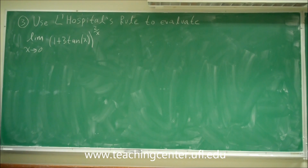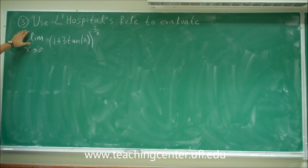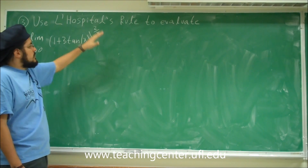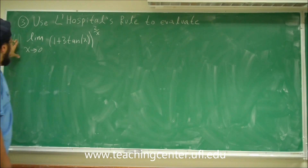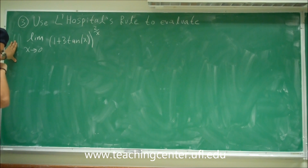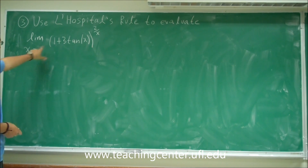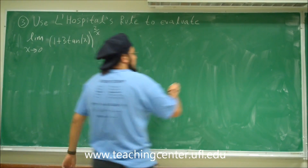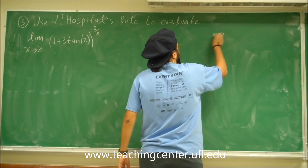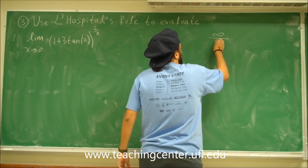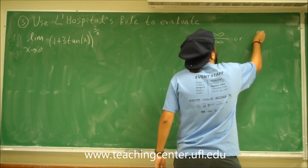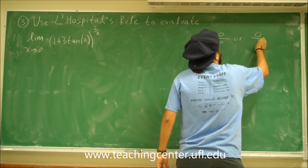This is problem 3 of the tear off sheet. Problem 3 states: use L'Hôpital's rule to evaluate this limit. Recall that the only way you can use L'Hôpital's rule is when you plug in x and you get an indeterminate form of infinity divided by infinity or 0 divided by 0.